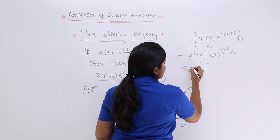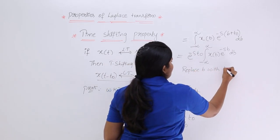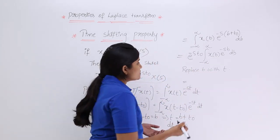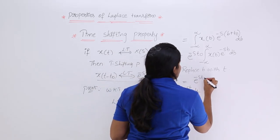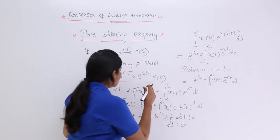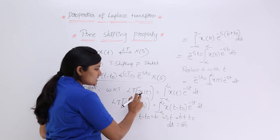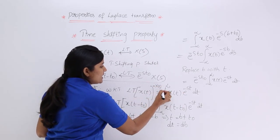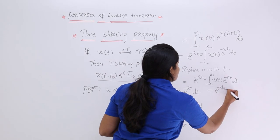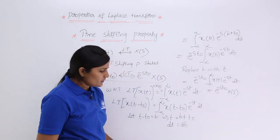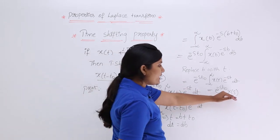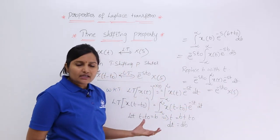Now replacing B with T, dB becomes dt. This gives E power minus S T naught times the integral from minus infinity to infinity of X of T E power minus ST dt. That integral is nothing but X of S — the Laplace transform of X of T. So finally, the Laplace transform of X of T minus T naught equals E power minus S T naught into X of S. This statement is proved.